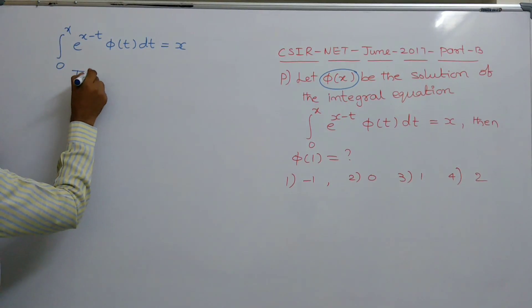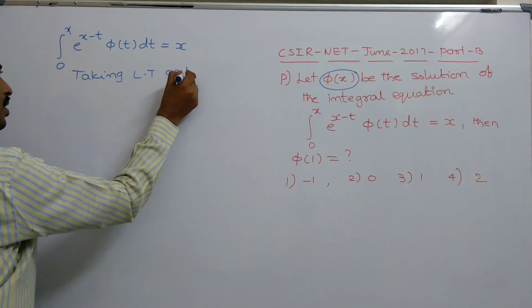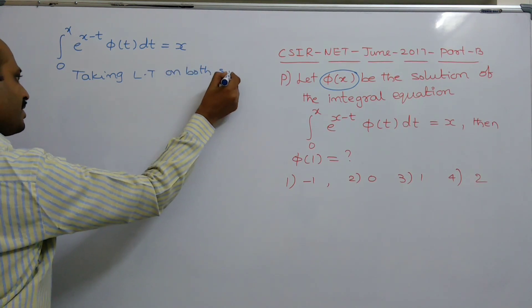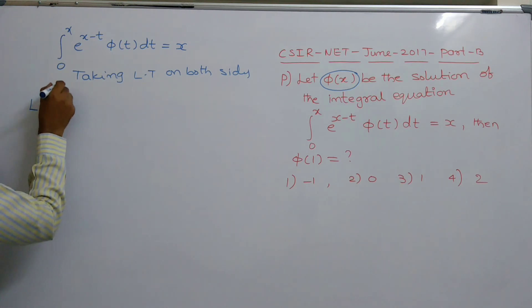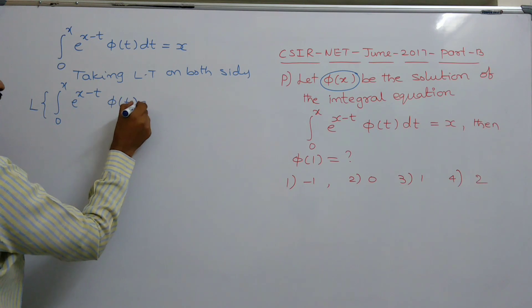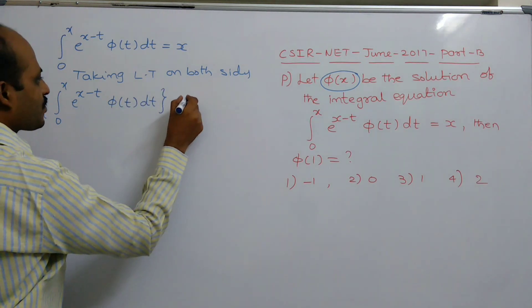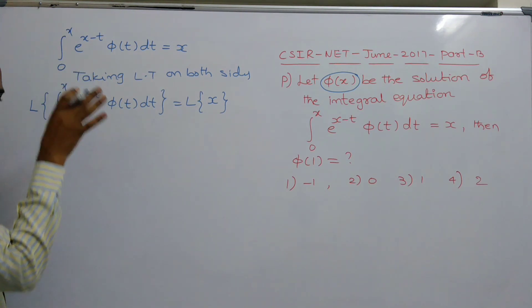Let's take Laplace transform on both sides. Taking Laplace transform on both sides, we get Laplace transform of integral 0 to x, e power x minus t, φ of t dt equals Laplace transform of x. You observe that if the variable x minus t appears,